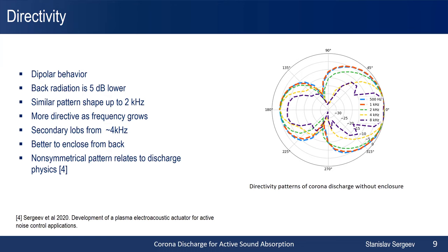It is better to enclose the actuator from the back in order to protect the high-voltage electrode and also to have more radiation in the front. The shape of the patterns remains the same at frequencies up to approximately 2 kHz, and then the patterns become more directive and secondary lobes appear. The non-symmetrical shape of the pattern relates to the presence of local heat release close to the high-voltage wire, which was shown in our previous work.